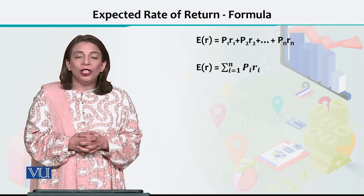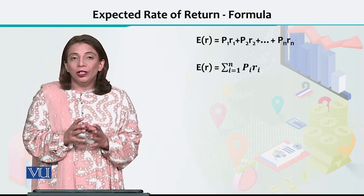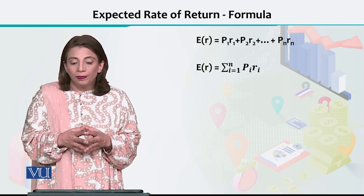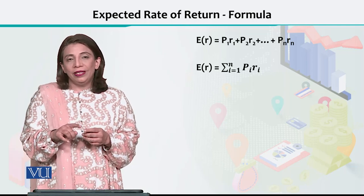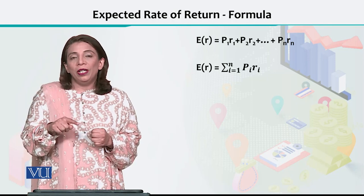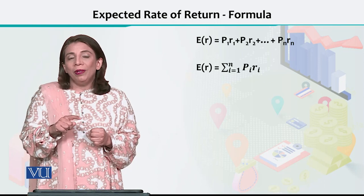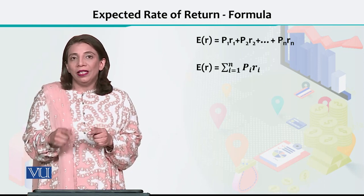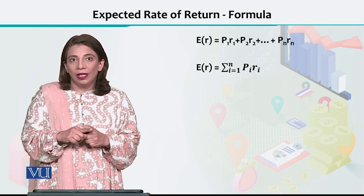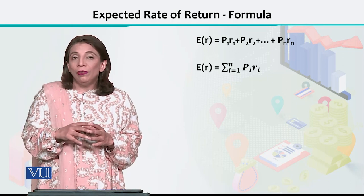The expected return is given by E(R). E stands for expected, and small r stands for the rate of return. So E of R means expected value of rate of return, which is the mean or average of returns.